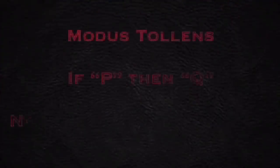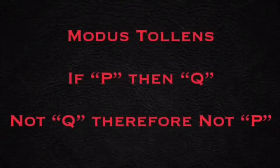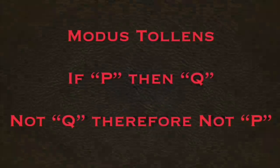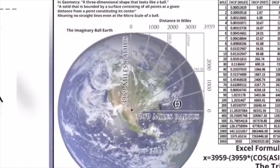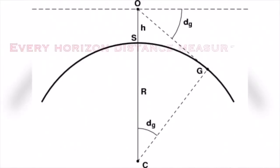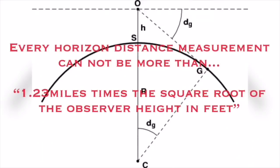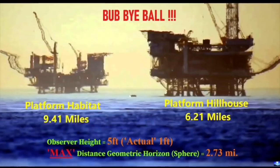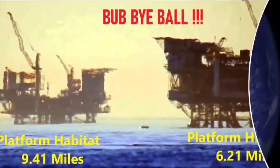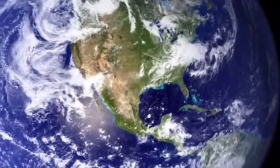Let's first address the Modus Tollens thing. Modus Tollens states: if P, then Q; not Q, therefore not P. If P — we live on a globe of radius 3,959 miles — then Q: every horizon distance measurement cannot be more than 1.23 miles times the square root of the observer height in feet. Not Q: the geometric horizon is far greater than 2.73 miles for 5 feet. Therefore, not P — the Earth is not a globe.